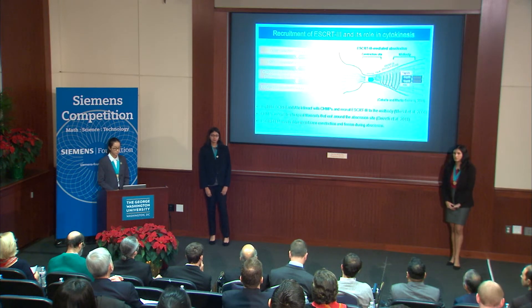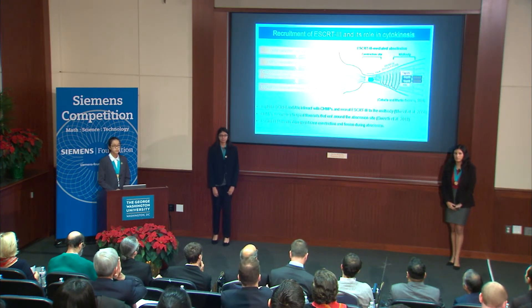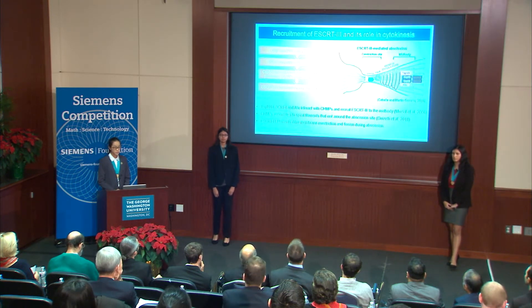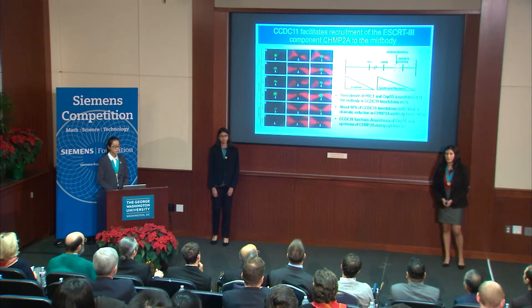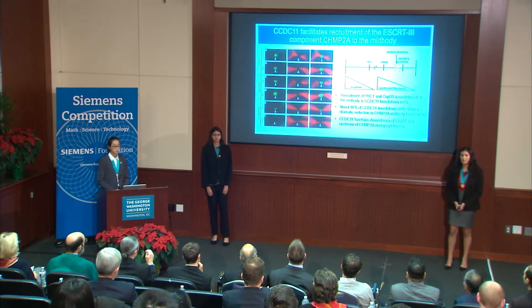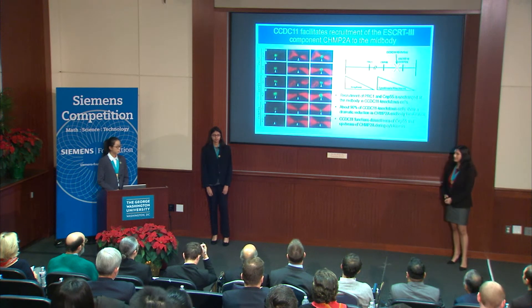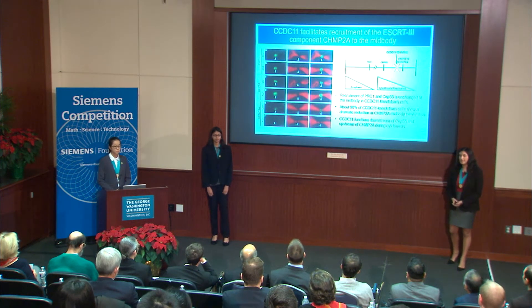Next, we wanted to understand the underlying molecular mechanisms associated with cytokinetic defects in CCDC11 knockdown cells. The ESCRT-III complex is known to be crucial in the final stages of cytokinesis and is composed of CHMP proteins necessary for membrane scission. Cytokinesis begins when kinase levels decrease, allowing PRC1 to bind to the central spindle. CEP55 localizes to the central spindle and recruits ESCRT-I through TSG101 and recruits ESCRT-III through the protein ALIX. We assessed mid-body recruitment of three major cytokinetic proteins: PRC1, CEP55, and the ESCRT-III subunit CHMP2A in CCDC11 knockdown cells.